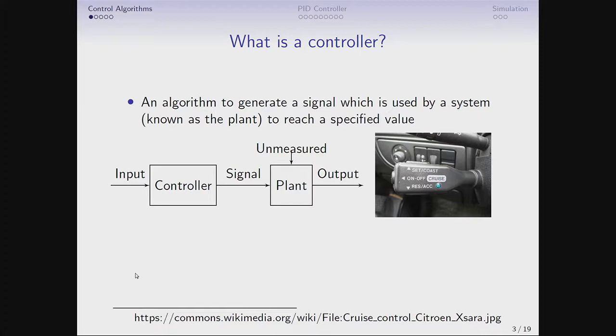So what is a controller? A controller is any algorithm which generates a signal used by some system, known as the plant, to reach a specified value. The input is usually from a user. I've got this example of cruise control, in which case the user would set a speed, and the controller would be the electronics in the car which generates a signal to the plant, which is the motor, and the motor generates the output, which is the car traveling at that speed.